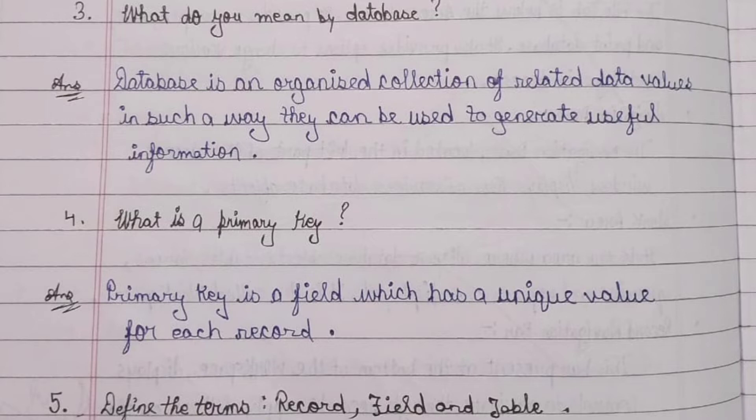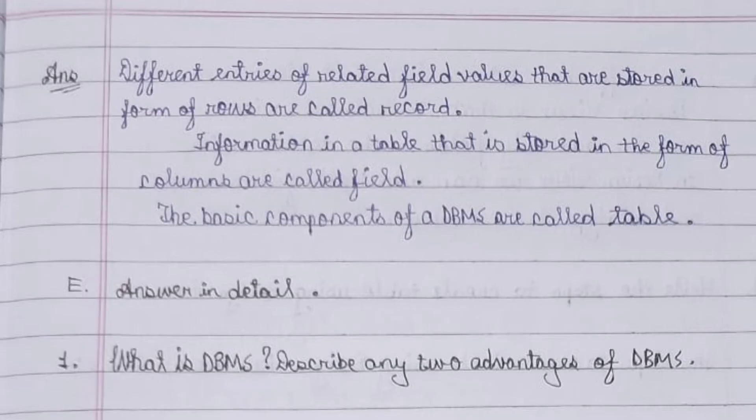Question 5: Define the terms record, field, and table. Answer: Different entries of related field values stored in the form of rows are called records. Information in a table stored in the form of columns is called a field. The basic components of a DBMS are called tables.